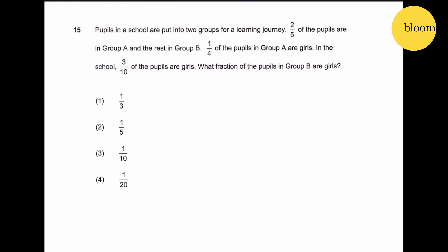Question 15: pupils in a school are put into two groups for a learning journey. Two-fifths of the pupils are in group A and the rest in group B. One quarter of the pupils in group A are girls. In the school, three-tenth of the pupils are girls. What fraction of the pupils in group B are girls? So we have the school - two-fifths in group A. Therefore group B must be three-fifths.